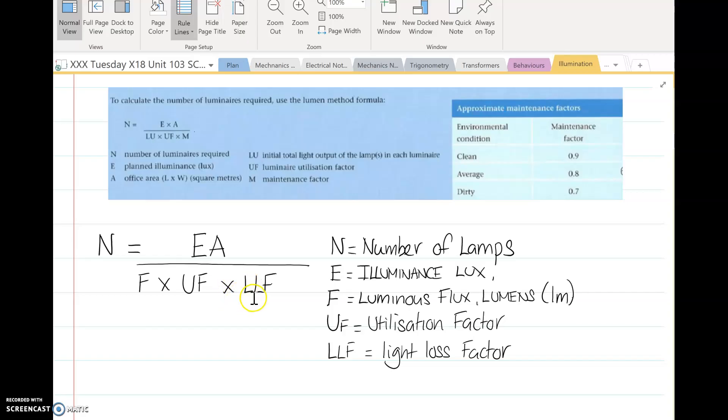So the light loss factor is also known as the maintenance factor, how often the lights are going to be cleaned. Typical factors: if it's a clean environment we can set that as 0.9, but if it's a very dirty environment then we can set that at 0.7. And what that does is that increases how many lights we need.